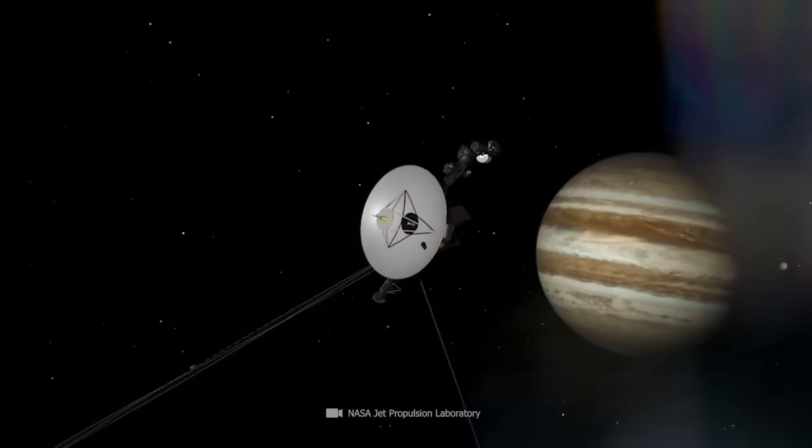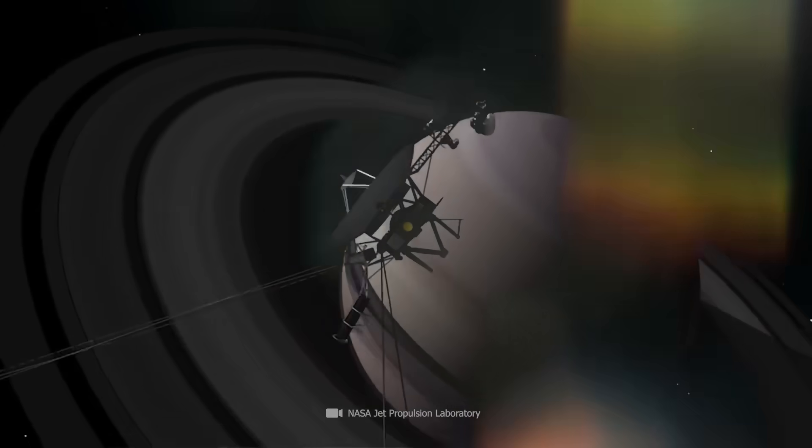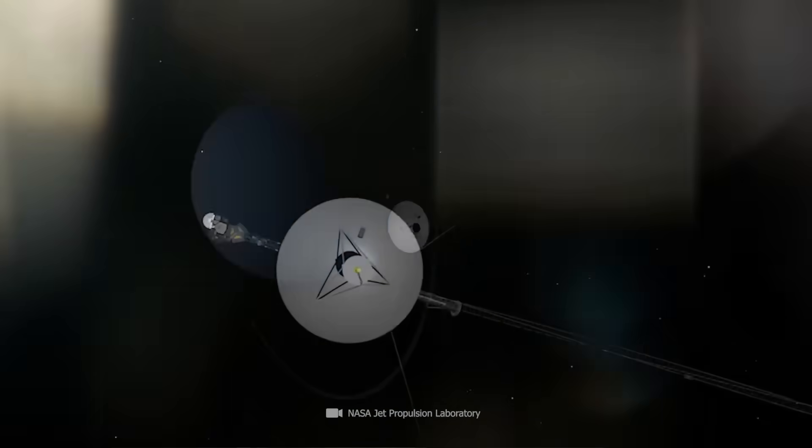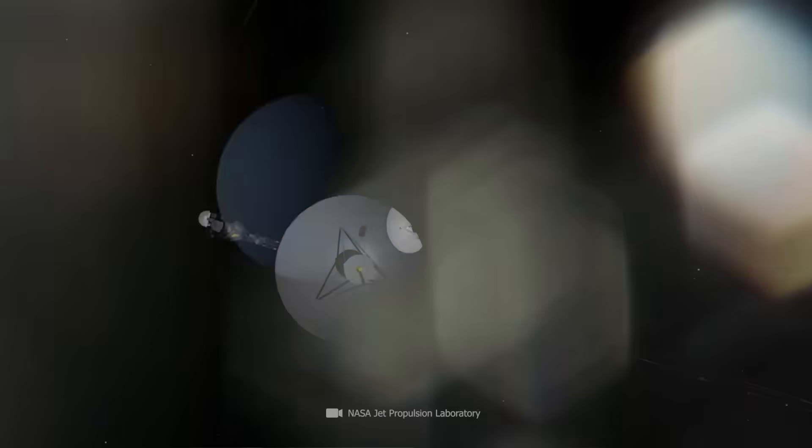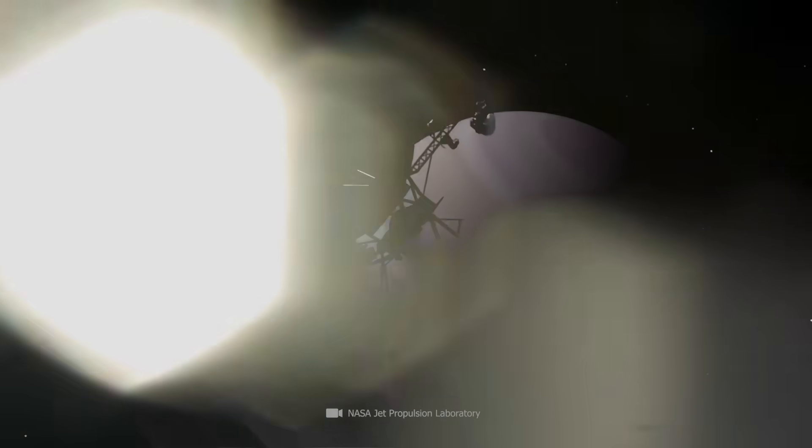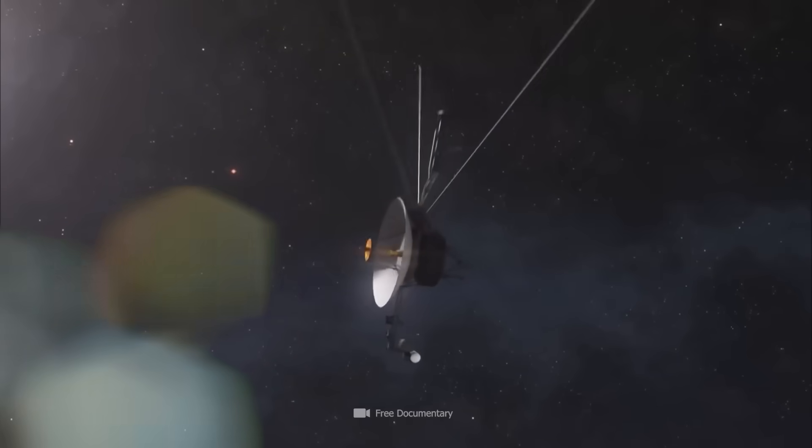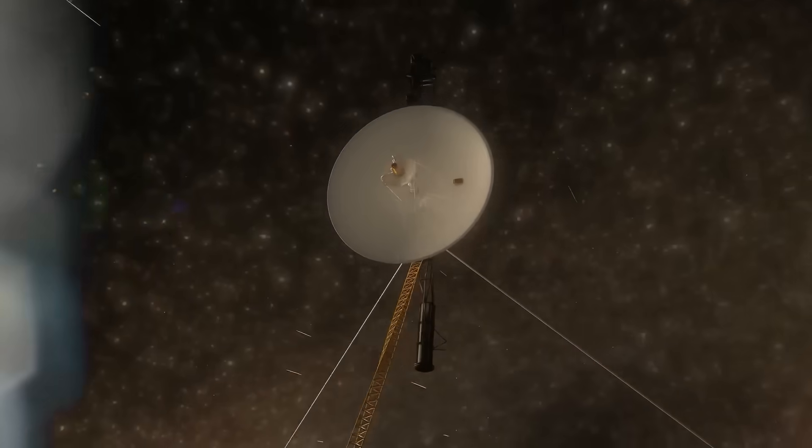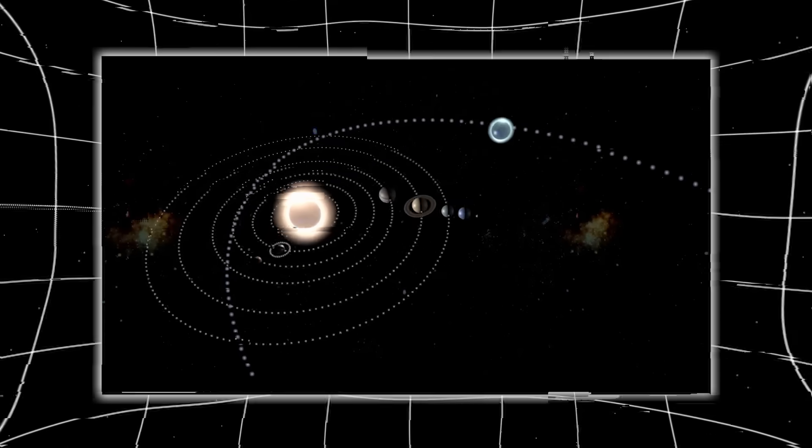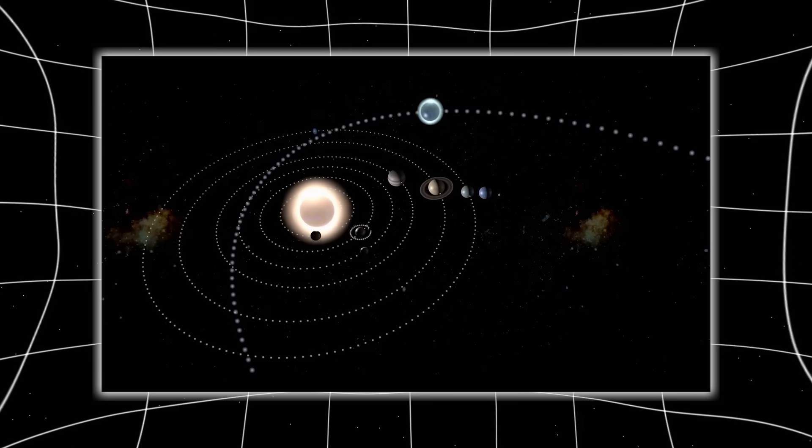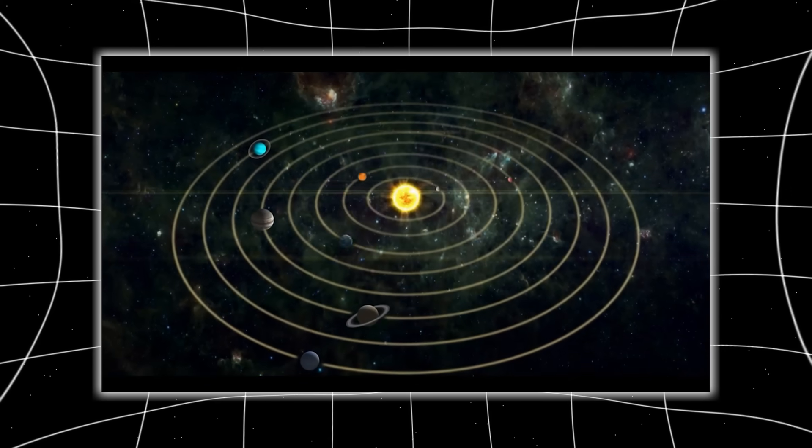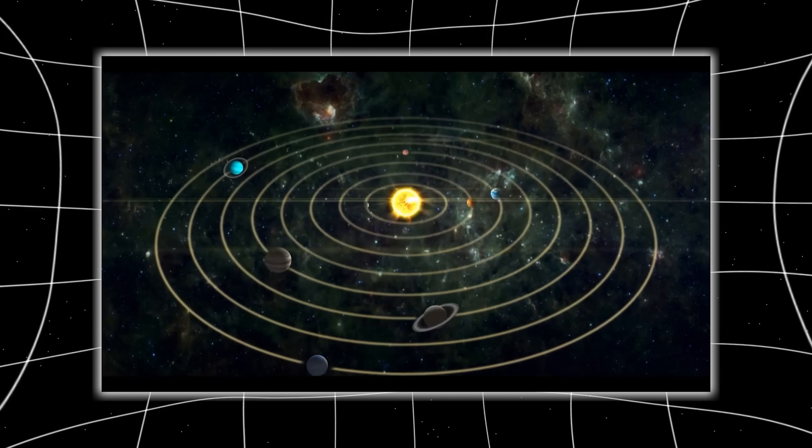When Voyager 2 sent back its most distant magnetometer reading yet, the numbers didn't just plateau. They inverted. The field didn't weaken. It turned. Space itself was folding in ways that defied Newtonian expectation. It was almost as if the probe had passed through a zone where time and energy flexed around it. A lensing effect, but without the mass to explain it. As engineers and astrophysicists scratched their heads, a radical idea took form.